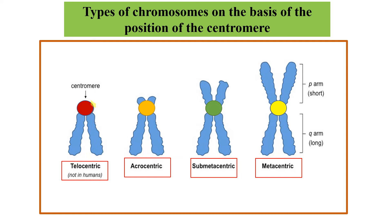If I talk about a chromatid — this is a single chromatid bound to its sister chromatid with the help of a centromere. The ends of the chromosome are referred to as telomeres; let me change the color — those are the blue ones. So this is a chromosome: two sister chromatids joined by a centromere.